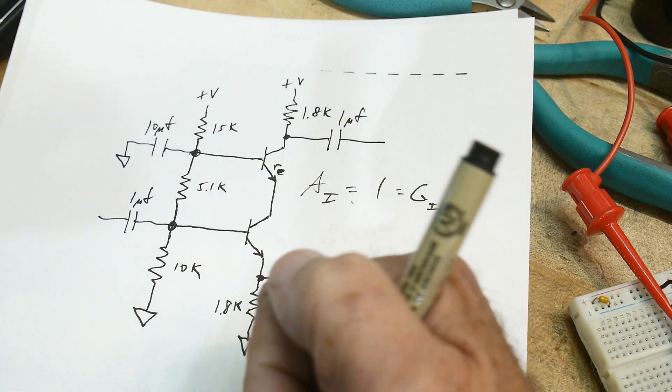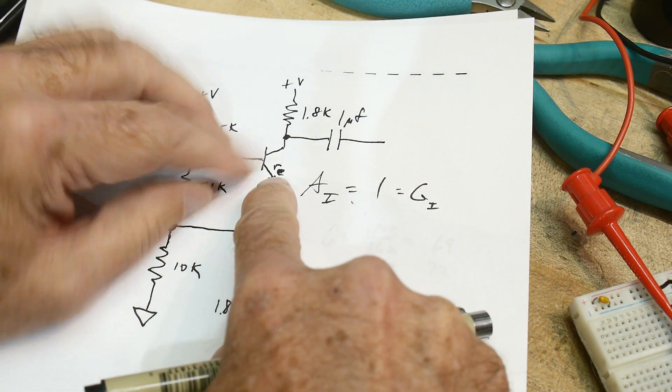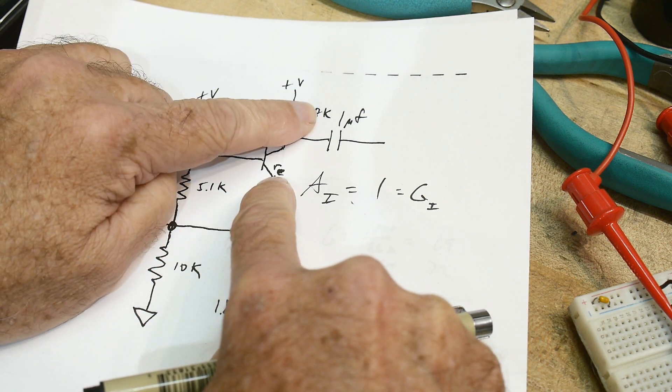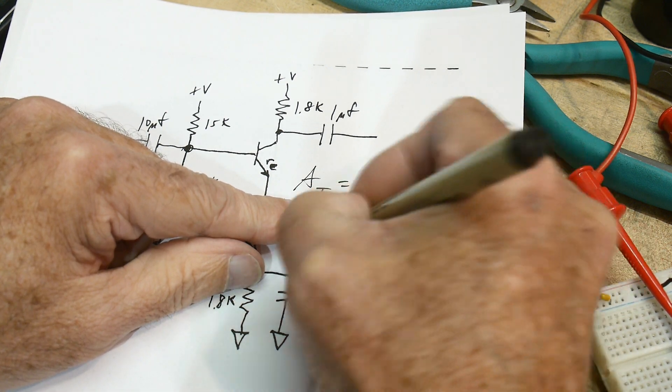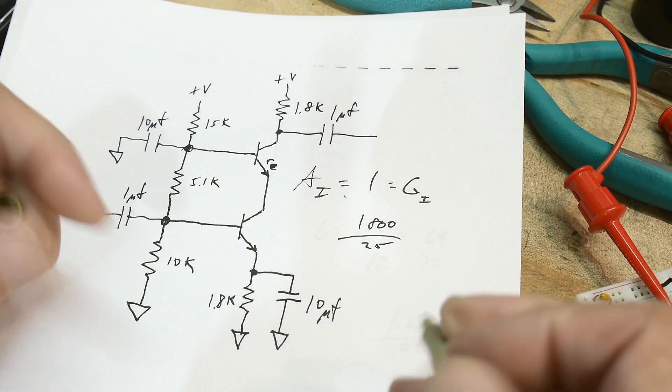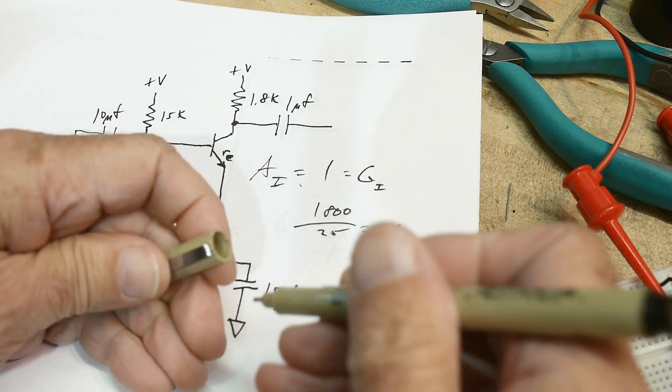I did a common base amplifier, but it's this emitter resistance divided by this collector resistor here. And again, once again, it's 1800 divided by 25. Which was what, 72? So somewhere around 72?